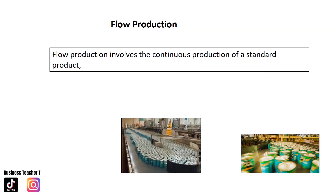Flow production involves a continuous production of a standard product. It often uses an assembly line and involves producing a large number of identical products. It is organised so that different operations are completed at different stages, with the job moving on to the next without stopping — a continuous process passing from one stage to another until completion.